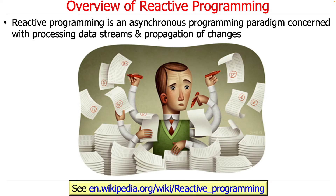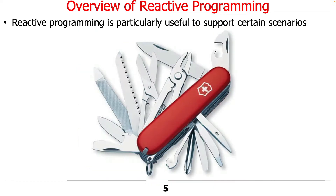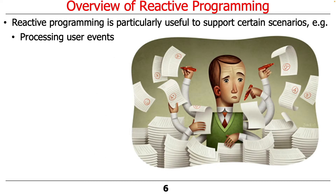Reactive programming is an asynchronous programming paradigm concerned with processing streams of data and propagating changes from publishers to subscribers. You can read more about it at this link — there's a lot of discussion about this. It's become a fairly popular paradigm in the last four or five years. It's particularly useful in certain scenarios, some of which are quite relevant to what we've been doing in this course.